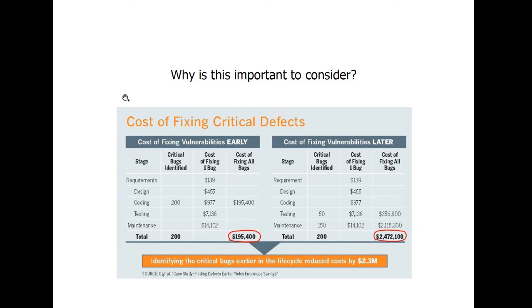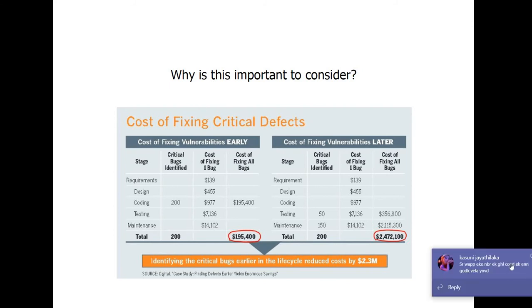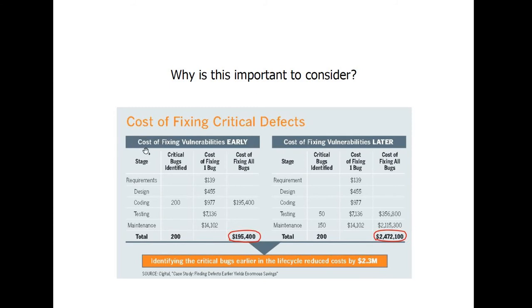These are some of the issues we need to consider in the application vulnerabilities taxonomy. If you look at why this is much more important in the software development industry, the first factor is cost. The cost of fixing vulnerabilities at early stages versus later stages differs significantly. Fixing them earlier will save money. If you find vulnerabilities after development and implementation, the cost to fix them will be much higher. That is why it is better to identify vulnerabilities at the design stage.